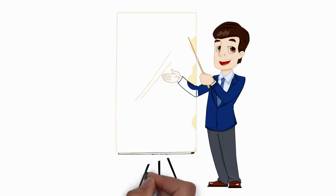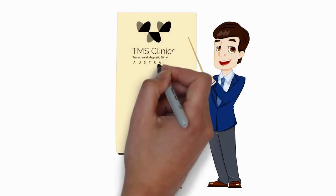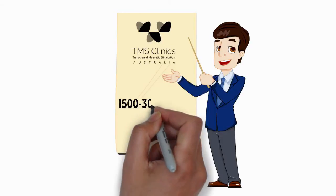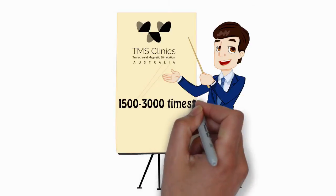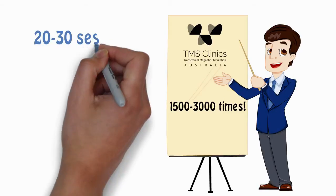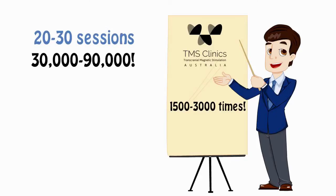While a single positive thought can practice these pathways once, a single TMS treatment will practice the positive pathways 1500 to 3000 times. A typical course of TMS is around 20 to 30 sessions and stimulates the positive pathways between 30,000 and 90,000 times.